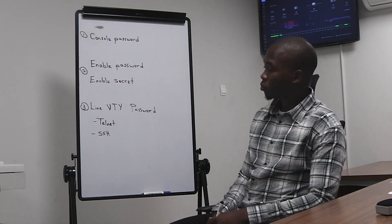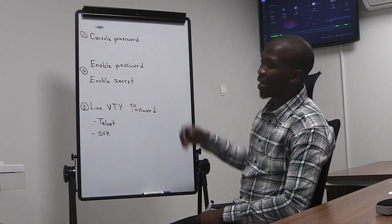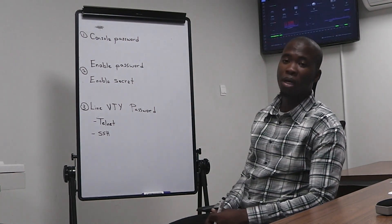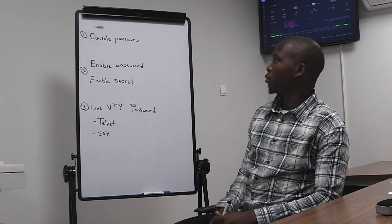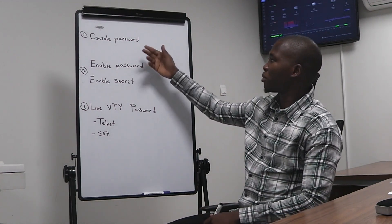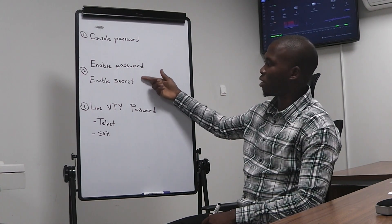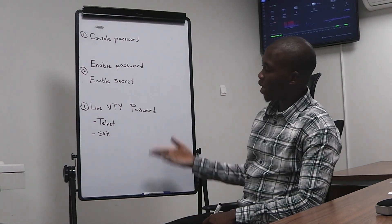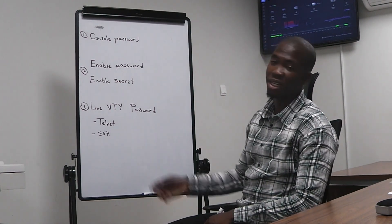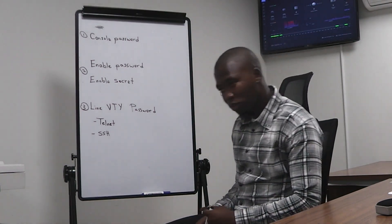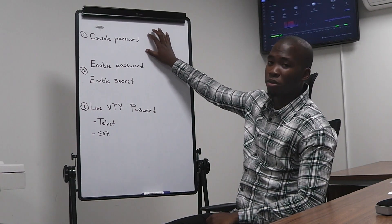Today we'll be discussing the types of login passwords that we can configure on our devices. The first one is the console password, then we have the enable password, enable secret, and then we have the line VTY password. Under line VTY we have Telnet and SSH.